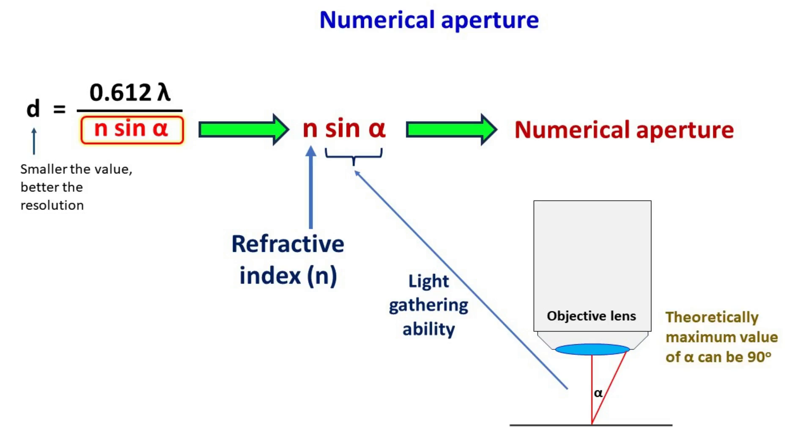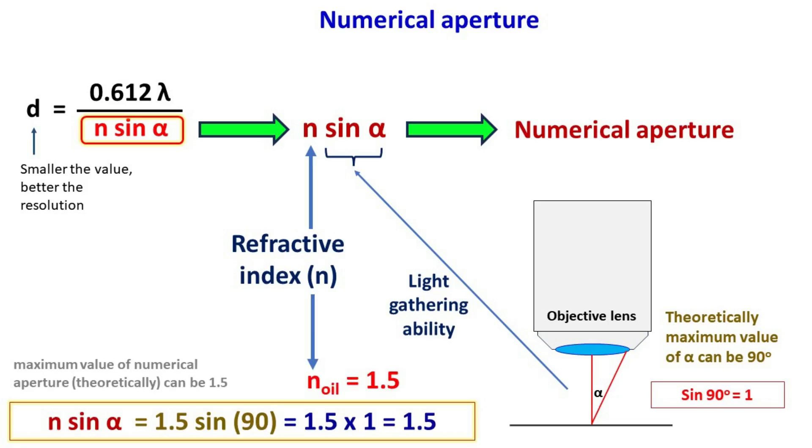Now, theoretically, alpha can have maximum value of 90 degrees. This occurs if the objective lens touches the sample. If you are using oil immersion objective, then the value of n will be 1.5. So, 1.5 times sin 90 will be 1.5. Hence, theoretically, maximum value of numerical aperture can be 1.5.